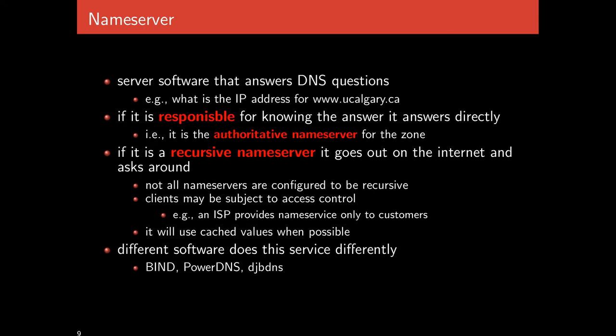If it's a recursive nameserver, it goes out on the internet and asks other people to get the answer. When your computer wants to look up google.com, your computer isn't doing all of the DNS resolution — you just ask your ISP, which runs a recursive nameserver that does all the work and gives you just the final answer. Not all nameservers are configured to be recursive, and there may be access control: your ISP's nameserver will likely only serve requests from its own customers.